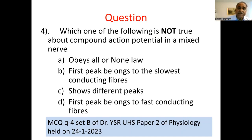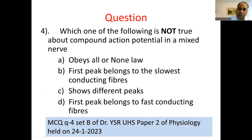The question is: which one of the following is not true about compound action potential in a mixed nerve? The options are: A, obeys all or none law; B, first peak belongs to slowest conducting fibers; C, shows different peaks; D, first peak belongs to fast conducting fibers. In my YouTube presentation on the paper two discussion, two options are correct — A and B.